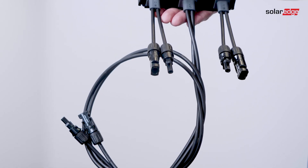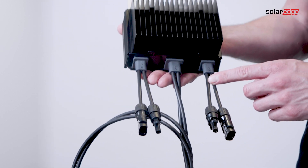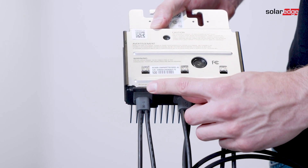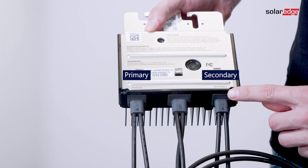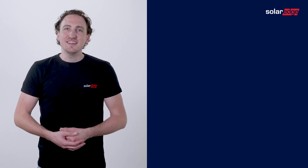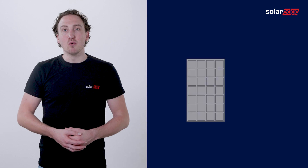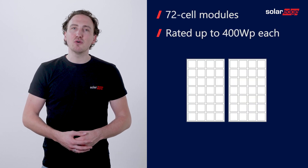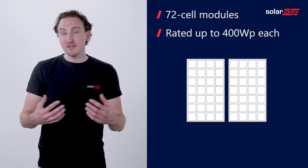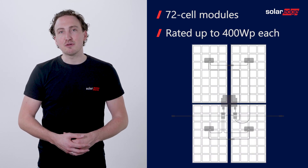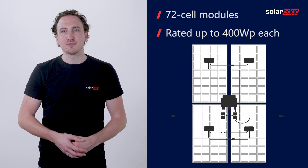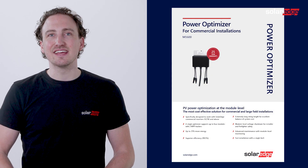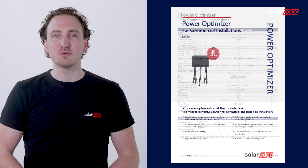The M1600 power optimizer has two separate inputs — one primary and one secondary input. This is clearly indicated on the optimizer backside. Each input supports the connection of one or two 72-cell modules rated up to 400 watt peak each, bringing us to a total of four PV modules per M1600 power optimizer. You'll find more detailed electrical specifications in the M1600 datasheet, available on the SolarEdge website.